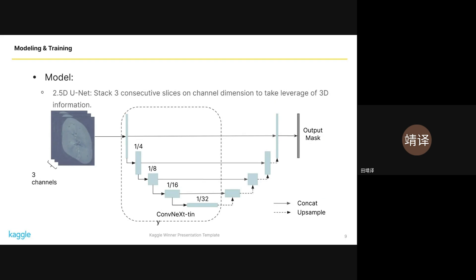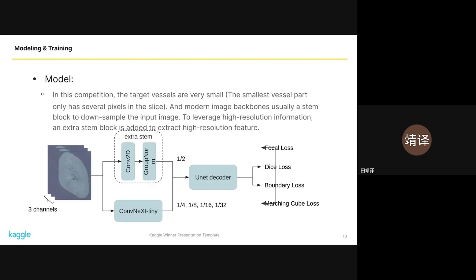For our model, we used a 2.5D U-Net architecture, stacking three consecutive slices to incorporate 3D information effectively. The target vessels in the competition were extremely small, so we added an extra stem block to our model for capturing high-resolution features.